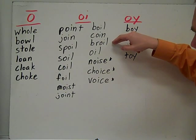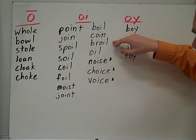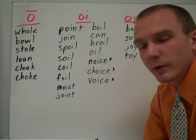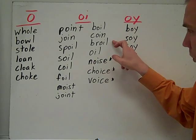Boil, coin, broil. Broil is a tricky word because it sounds like boil and it's a word you don't use often. It's another way to cook things with really intense direct heat. Broil.